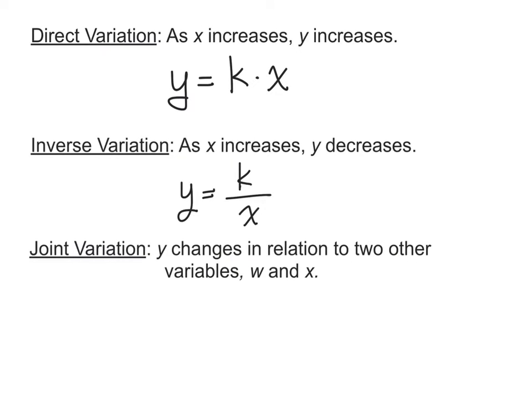The third one is called joint variation, and that's when y changes in relation to two other variables. So not just a relationship between x and y, but it looks like direct variation where you have some constant, and then it's times two variables, maybe w and x. This one doesn't get used quite as often, but we might run into a situation where we're dealing with a variation that uses direct variation and inverse variation with a couple different variables.